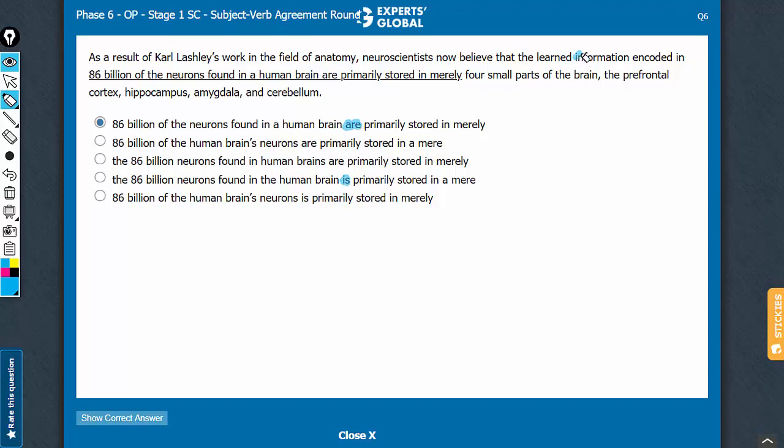It's referring to information, which is singular. So answer choices which say 'are' can be comfortably eliminated. A can go, B can go, and C can go. It's between D and E now.